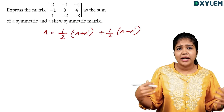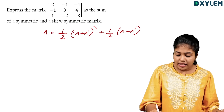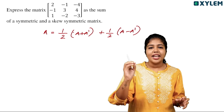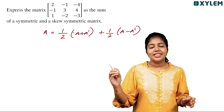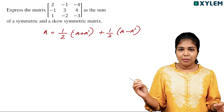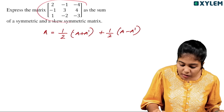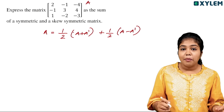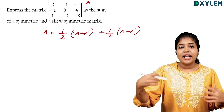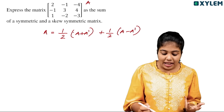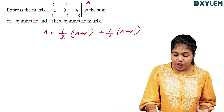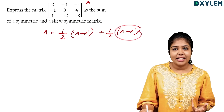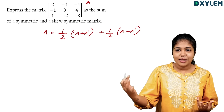We will write a symmetric and square matrix. We will write the matrix using this formula, expressing it with A transpose and A minus A transpose.